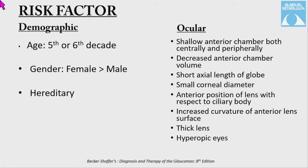Risk factors are divided into demographic and ocular factors. Demographically, age above 40 increases risk, partly due to increased lens thickness from lenticular changes and pupillary miosis. Females are more predisposed than males, as women have a shallower anterior chamber and about 10% less intraocular volume. Primary angle closure disease is sporadic but can be inherited in autosomal dominant or autosomal recessive patterns.